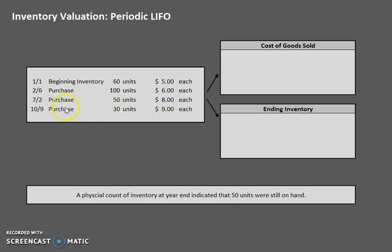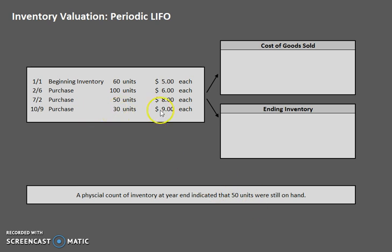So if those that were sold are at the bottom, where are the 50 units in ending inventory going to be? Well, they've been sold, so our ending inventory is going to be at the top, and we'll find that and work our way down until we account for all 50 units.